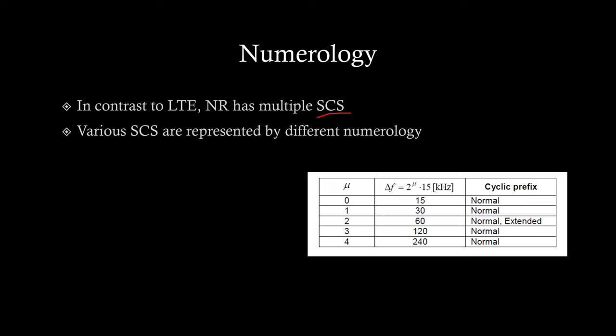So, LTE has single possible value of subcarrier spacing while NR has multiple values. Therefore, in summary, idea of numerology is to have representation of various possible subcarrier spacing in NR.